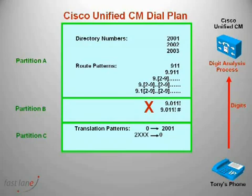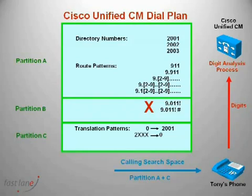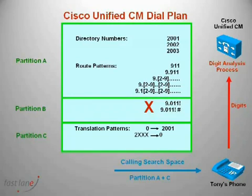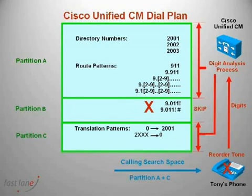The next step in the process is to create what's called a calling search space. A calling search space contains a list of partitions that digit analysis is allowed to look at when you initiate a call. In the case of Tony, Tony's calling search space contains partition A plus C. When Tony tries to make an international call, he will send the digits to the digit analysis process. The digit analysis process will look at Tony's calling search space and thus search partition A and partition C but skip partition B. This will mean Tony will get a reorder tone and no longer be able to call international numbers.